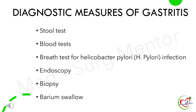Major diagnostic measures done to identify gastritis are stool test, blood test, breath test for Helicobacter pylori infection, endoscopy, biopsy, and barium swallow.